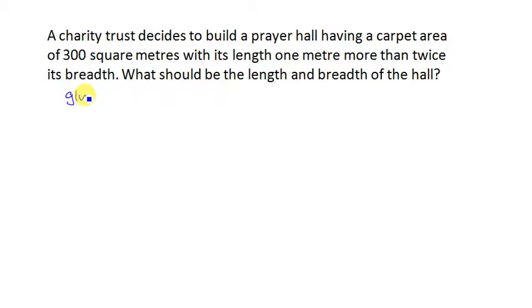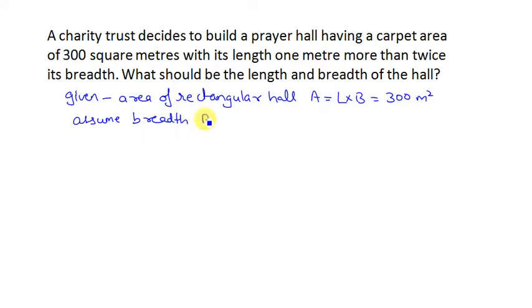Given what is the area of the hall. This is the area of the rectangular hall, the area of the rectangular hall is 300 meter square. Assume the breadth of the hall is x, then the length of the hall is double, its double plus 1 more.